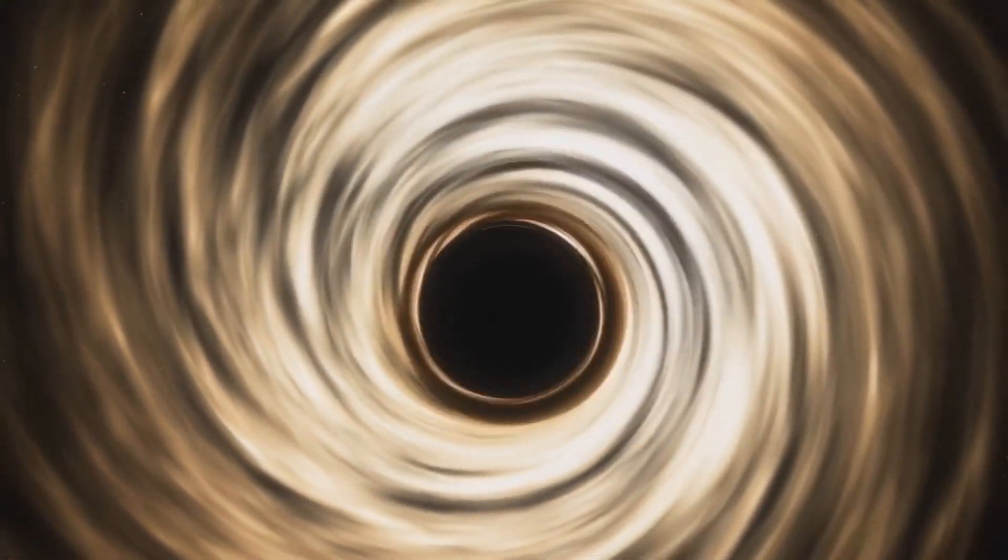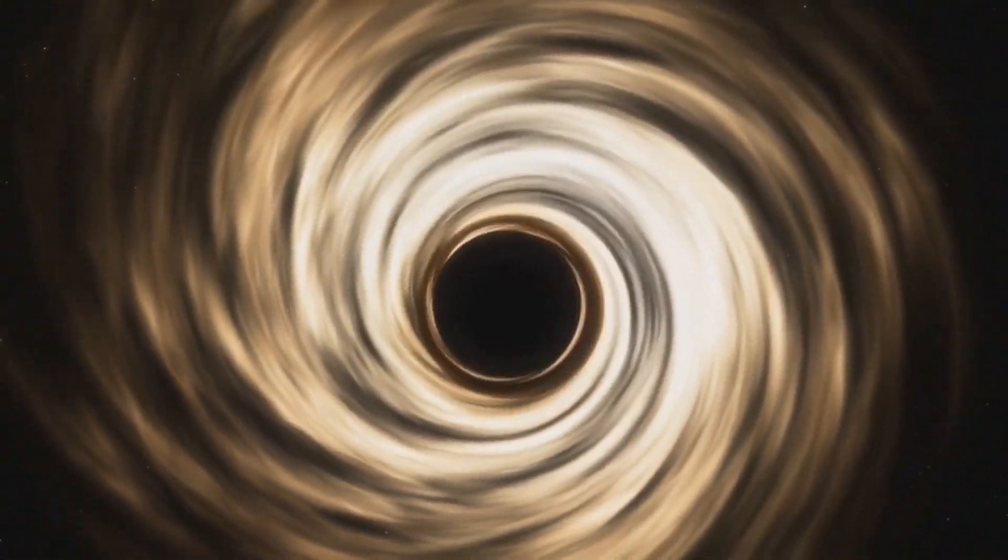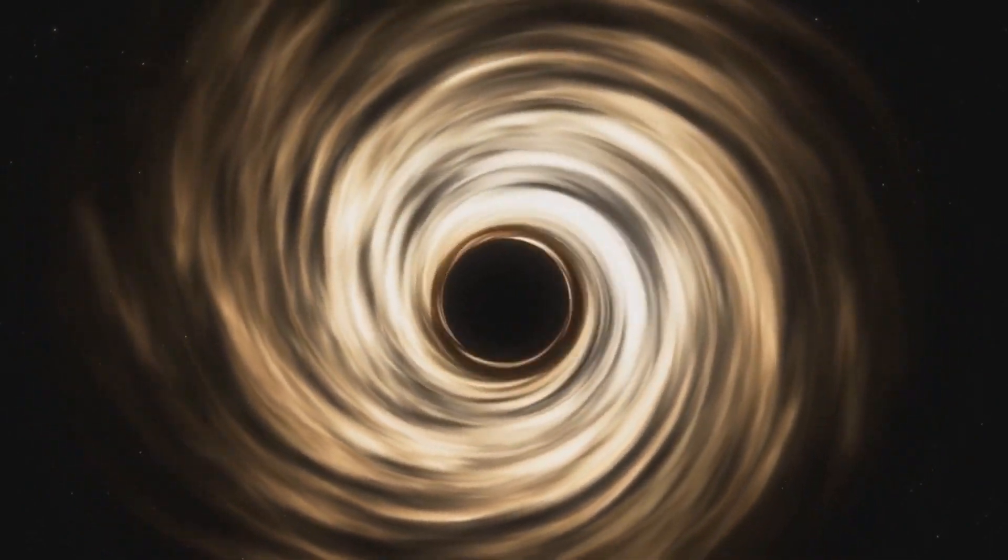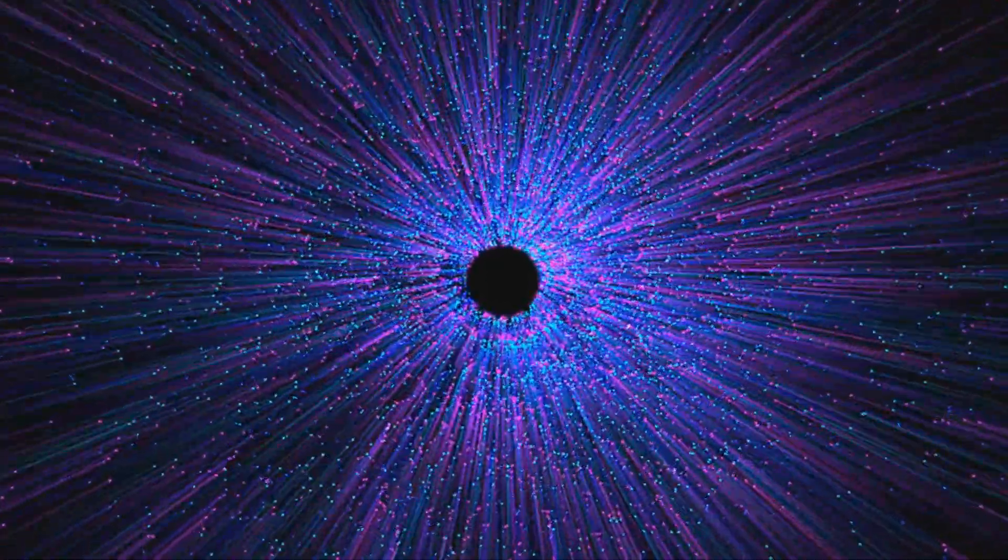You see, Hawking radiation implies that black holes have a temperature that's inversely proportional to their mass. Simply put, the smaller the black hole, the hotter it glows. This new experiment seems to suggest that entangled particles near the event horizon might play a crucial role in generating this radiation.